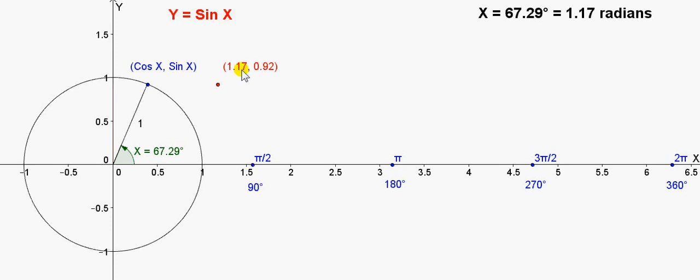So, the x-value of this point here is this angle here. I am showing this angle in degrees in this picture, but I also have it stated in radians here. So, 67.29 degrees is 1.17 radians. This is one point on the graph.